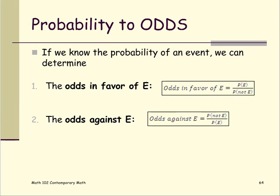For the odds against E or the against event E, it's computed by probability of not E divided by P of E. But the way we write it is going to be the number or the quantity on the left and then the colon, the number on the right.